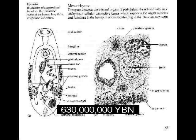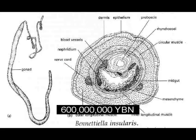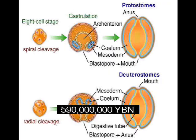Intestine. Vagina, uterus, and genital pore. Penis. Red blood cells and blood vessels. Protostomes — ancestor of all arthropods, brachiopods, and mollusks.